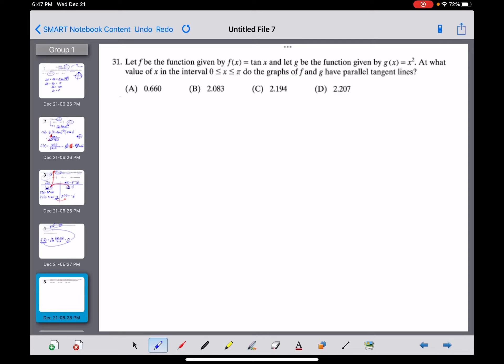As we move on to problem 31, this is the first question in the calculator section, which you can kind of tell by looking at the four answers. These are decimals, they certainly look irrational, they're not any nice decimals that I recognize. So this is in all likelihood a calculator problem.